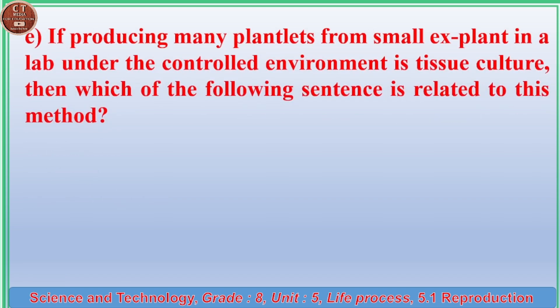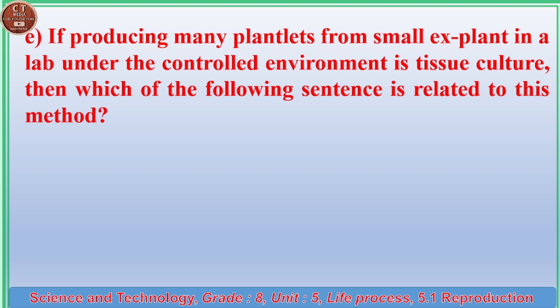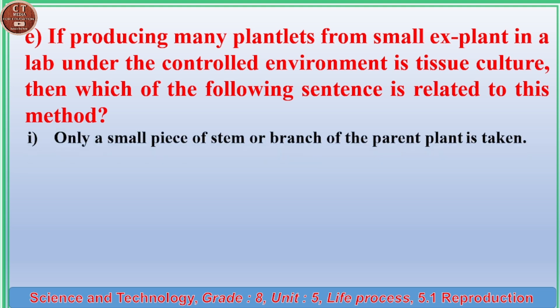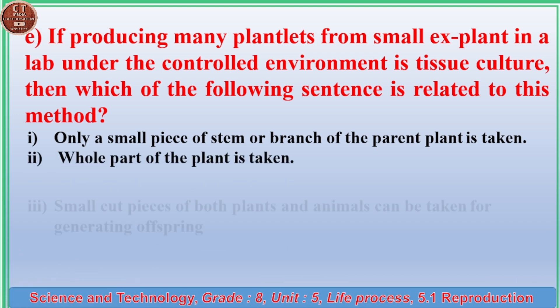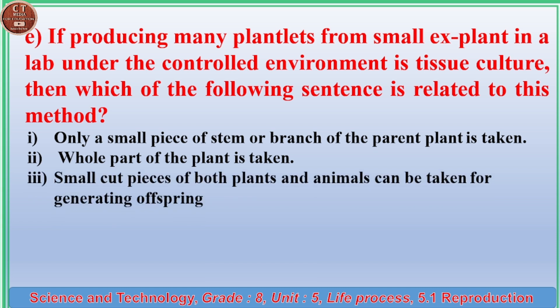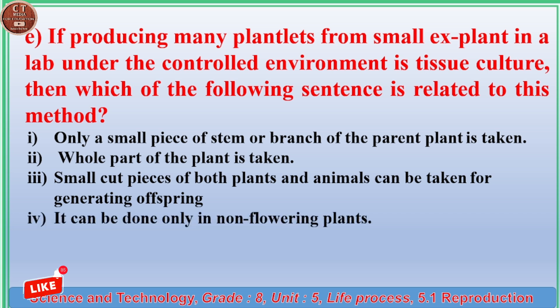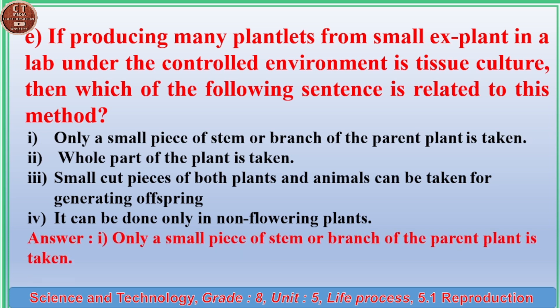(e) If producing many plantlets from a small explant in a lab under a controlled environment is tissue culture, which sentence is related to this method? (1) Only a small piece of stem or branch of the parent plant is taken. (2) The whole part of the plant is taken. (3) Small cut pieces of both plants and animals can be taken. (4) It can be done only in non-flowering plants. Answer: (1) Only a small piece of stem or branch of the parent plant is taken.